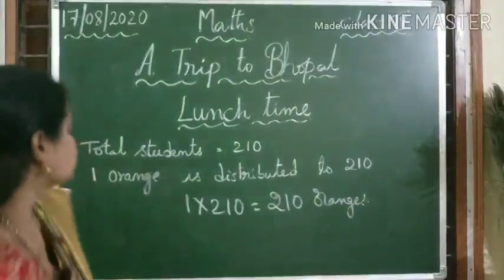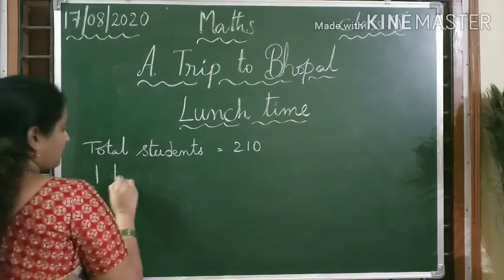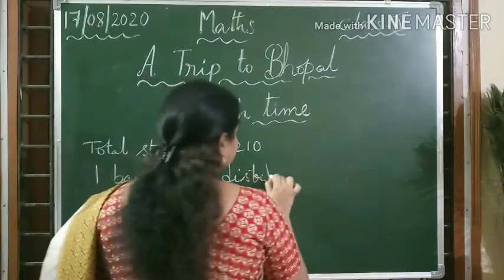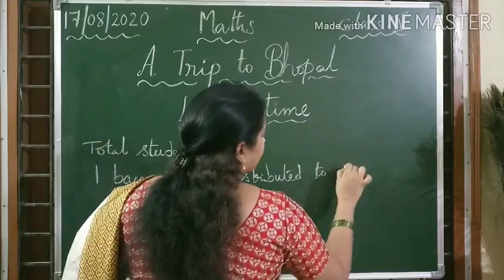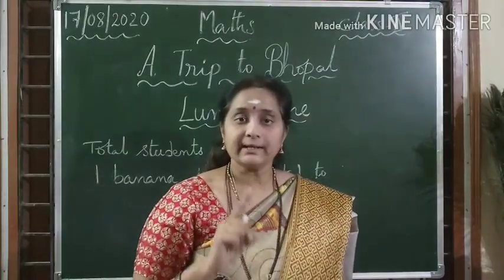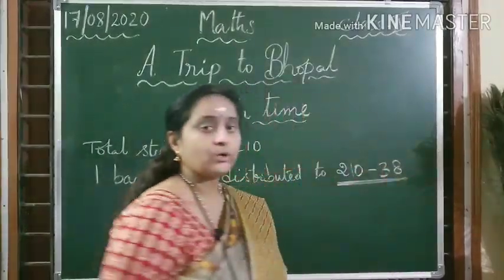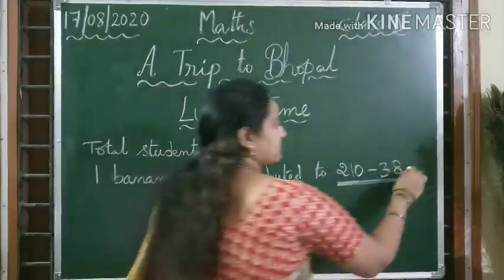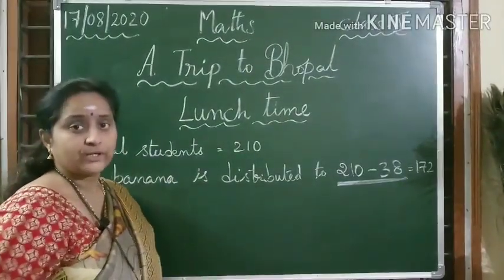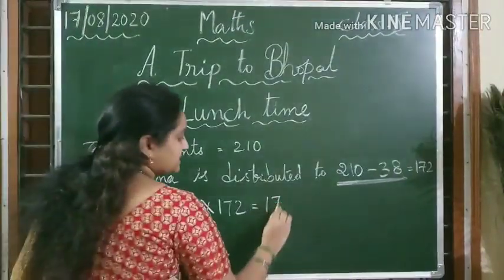Now let us see about bananas. One banana is distributed — but 38 students did not take bananas. So we need to find out the number of bananas. So 210 minus 38, which is nothing but 172. So the number of bananas distributed to 172 children is 1 into 172. Each gets one banana — 172 bananas.